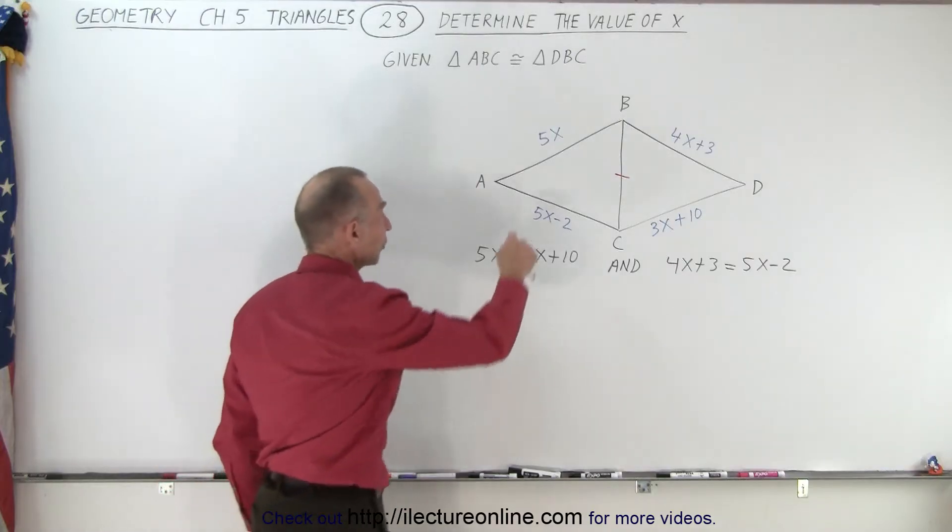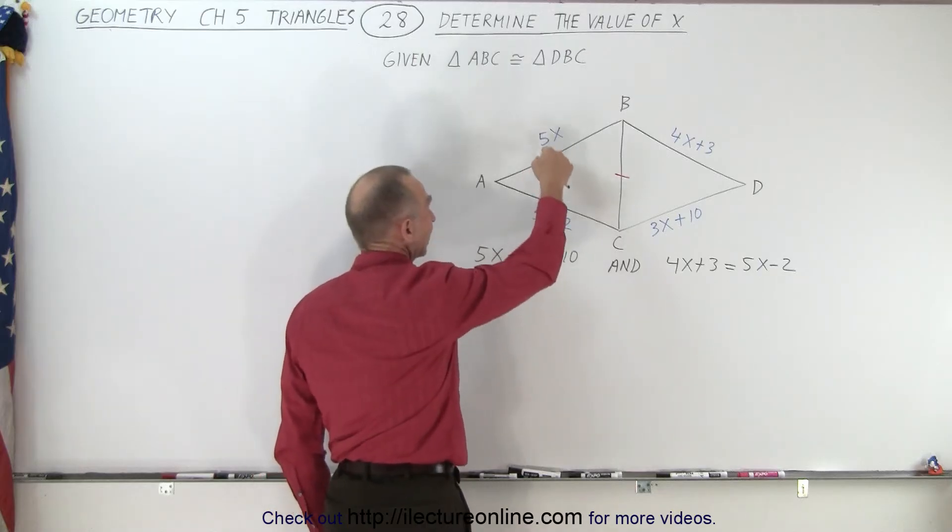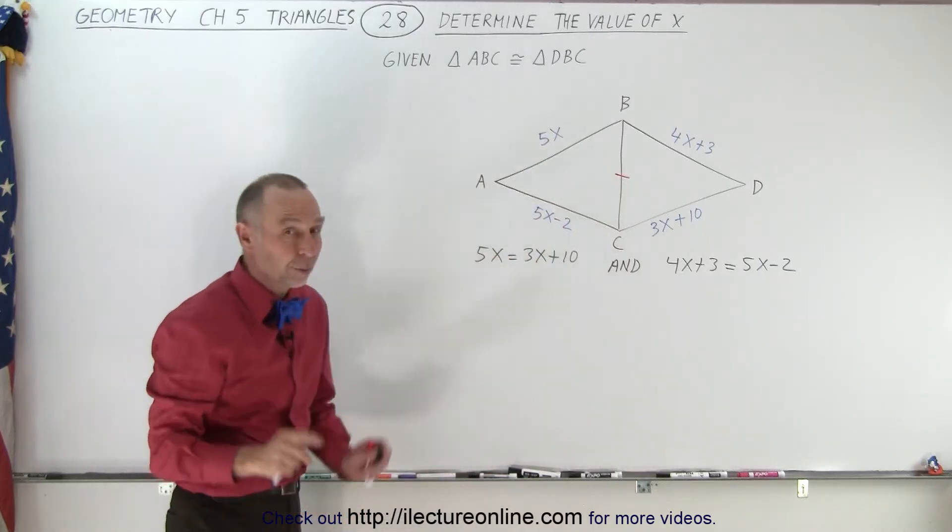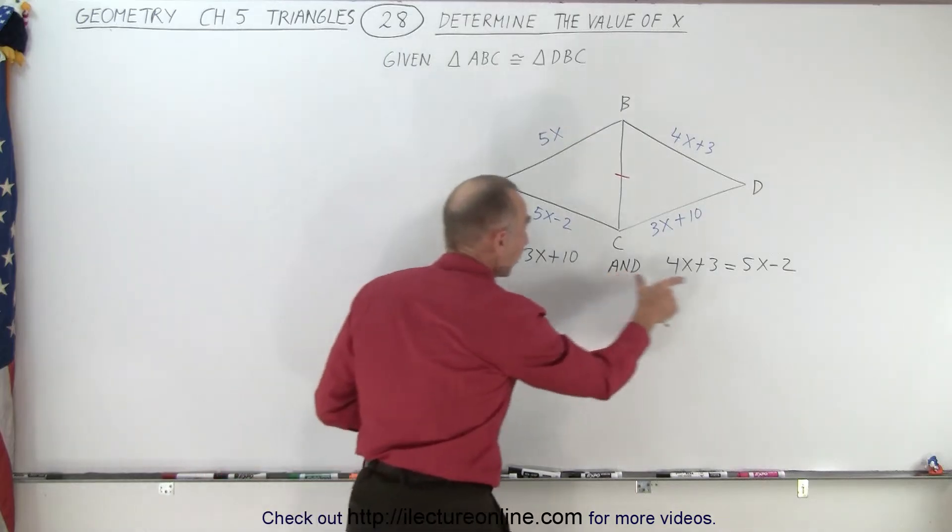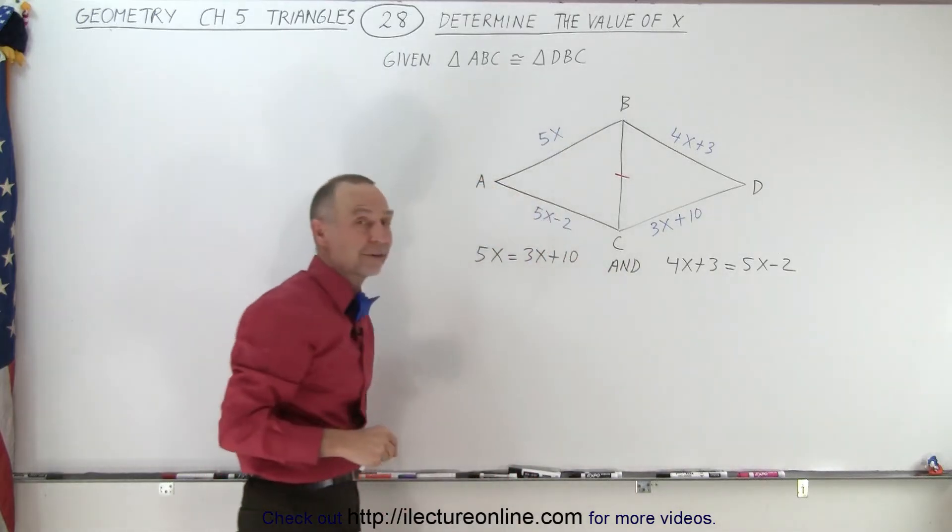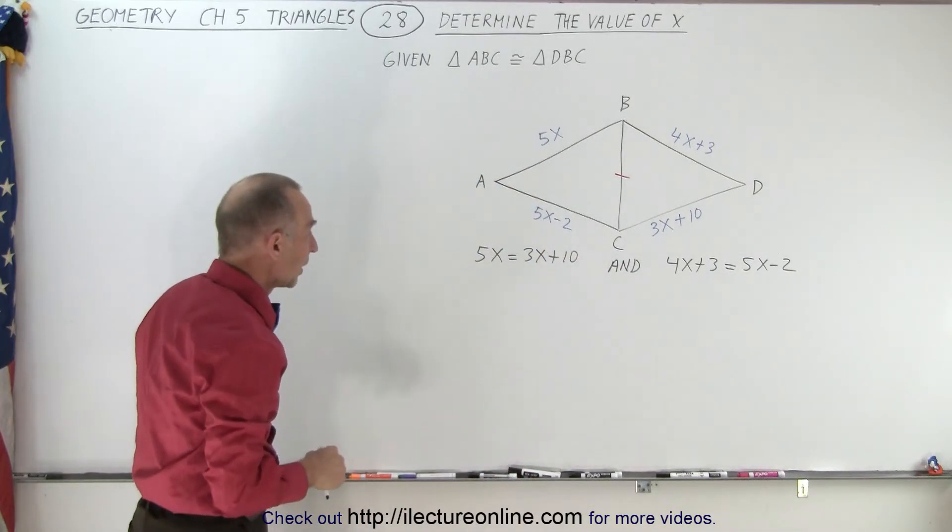And we know that, of course, these two sides cannot have the same length because 5x cannot equal 5x minus 2. So we should get the same value for x for both of these. If we do, that's the value for x we want.